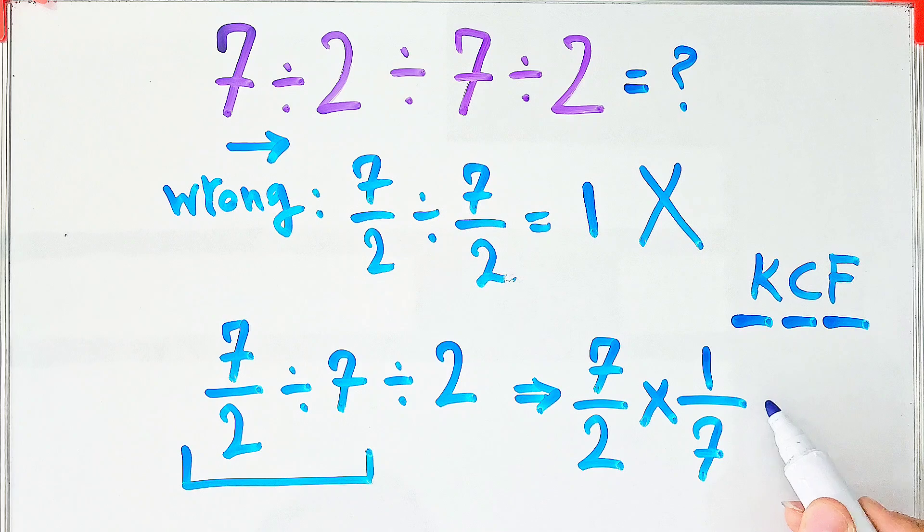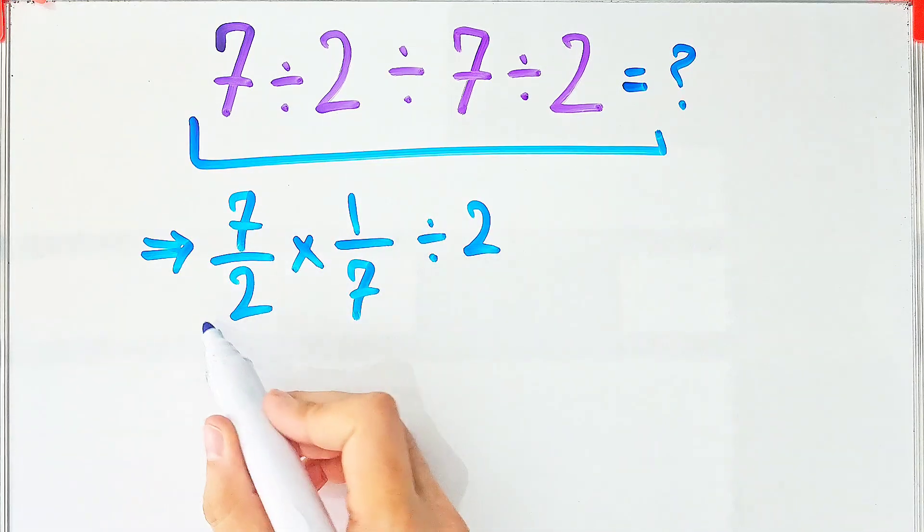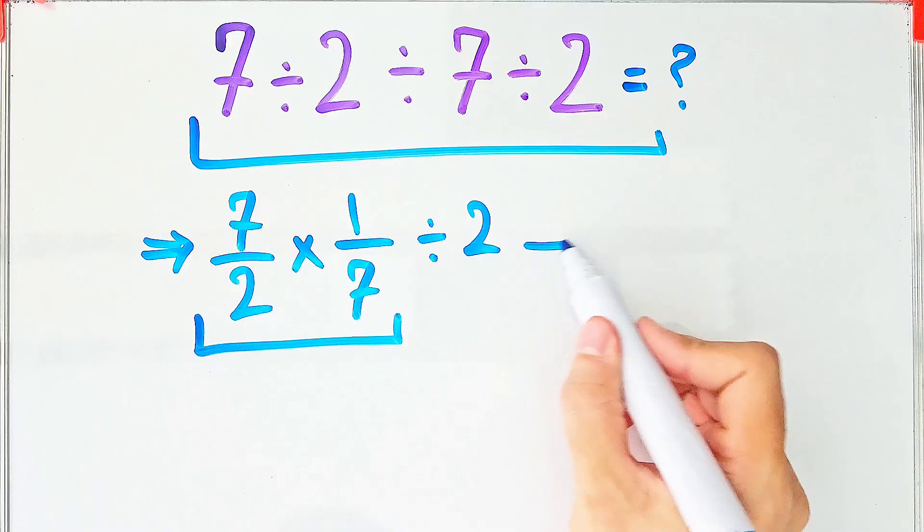Now we have a new expression: 7 over 2 times 1 over 7, then divided by 2. First, we do this multiplication.